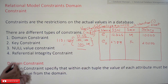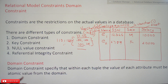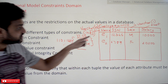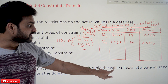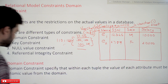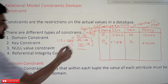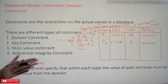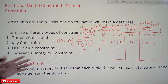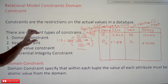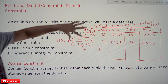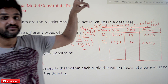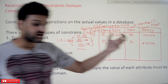Reading the definition again: domain constraints specify that within each tuple, the value of each attribute must be an atomic value from the domain. Atomic value means a simple value which cannot be further divided — for example, 100, which cannot be broken into pieces. Those atomic values must come from within the domain.